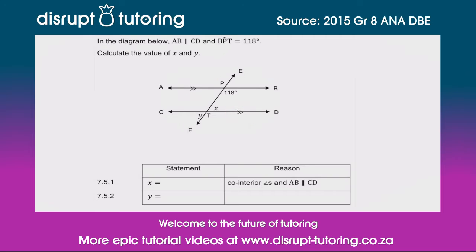They've also said that angle BPT is equal to 118 degrees, and they have noted that as well. So BPT — that's going to be that 118 over there. Now we need to complete the table by calculating the value of x and y.